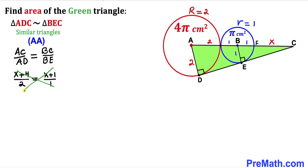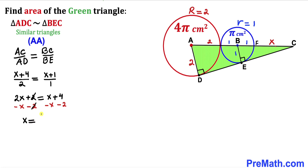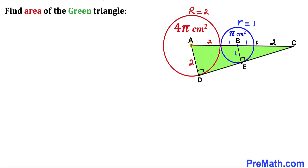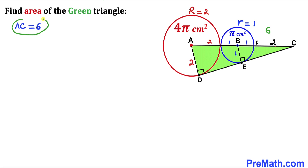Cross multiplying gives 2x + 2 = x + 4. Subtracting x and 2 from both sides, x turns out to be 2 centimeters. So the whole AC length turns out to be 2 + 1 + 1 + 2, which gives us 6 centimeters.